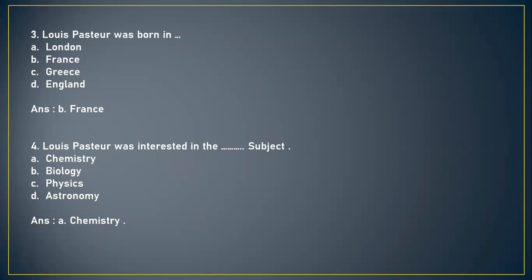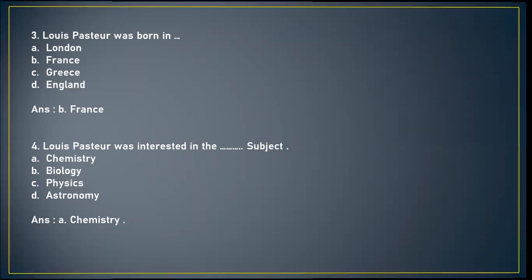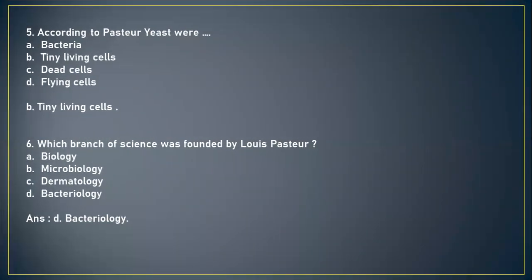Next question: Louis Pasteur was most interested in which subject? A) Chemistry, B) Biology, C) Physics, or D) Astronomy. The answer is A, Chemistry. Next question: According to Pasteur, yeast were — A) bacteria, B) tiny living cells, C) dead cells, or D) flying cells. The answer is B, tiny living cells.